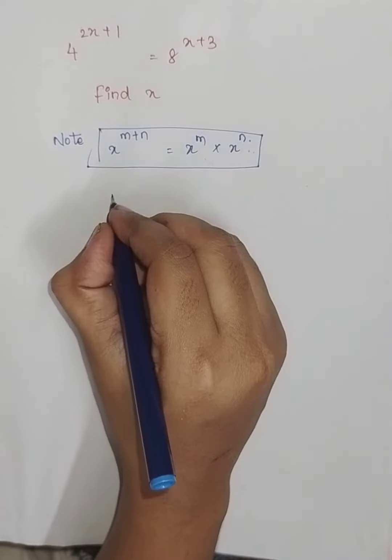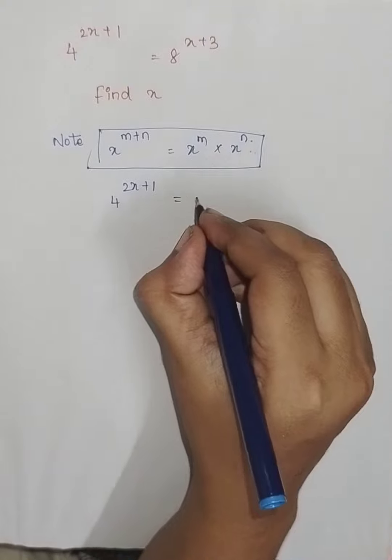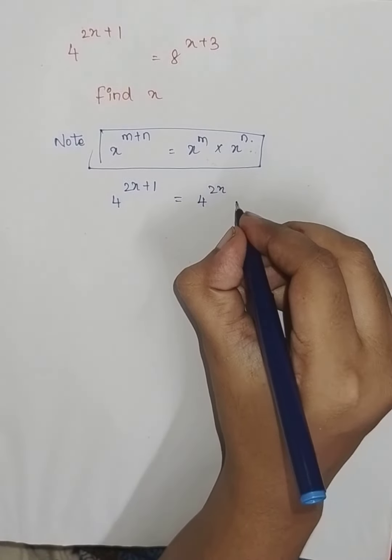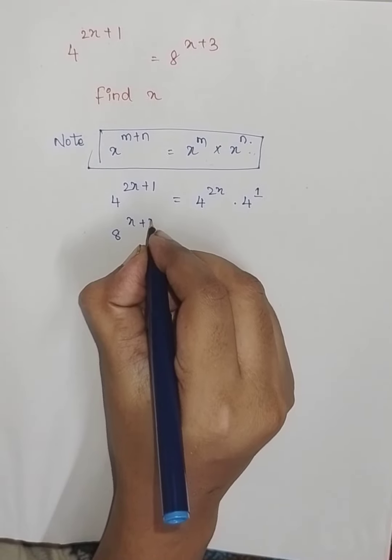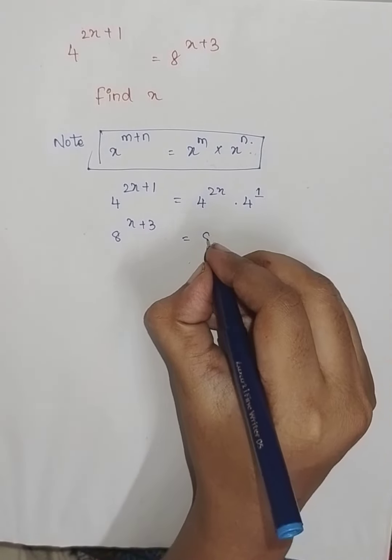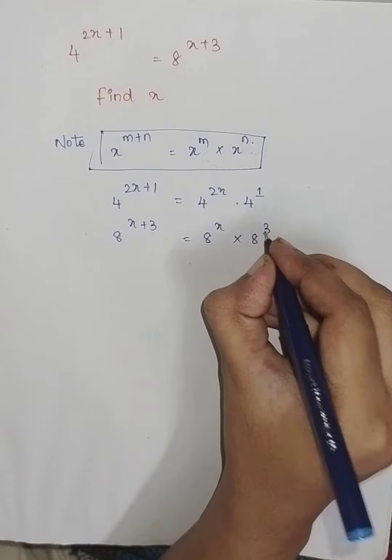Therefore, 4 power 2x plus 1 can be written as 4 power 2x into 4 power 1. Similarly, 8 power x plus 3 can be written as 8 power x into 8 power 3.